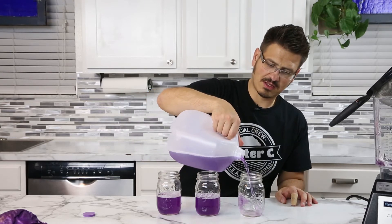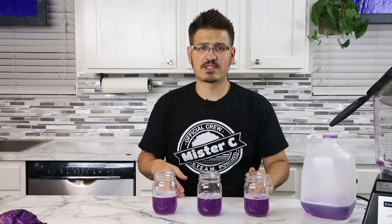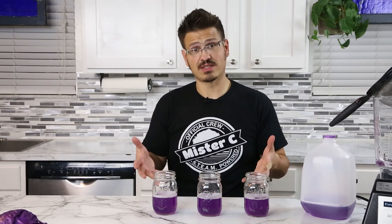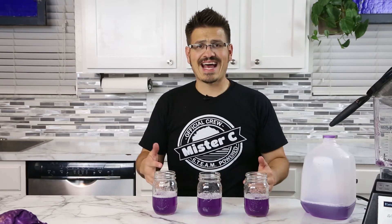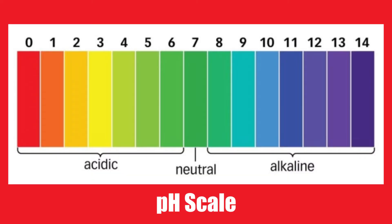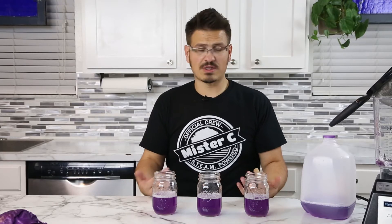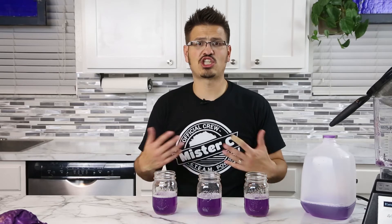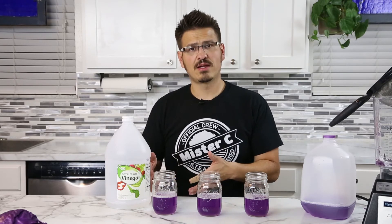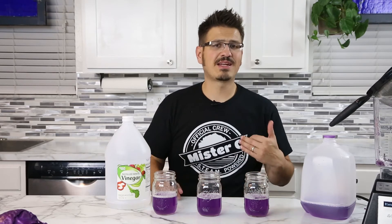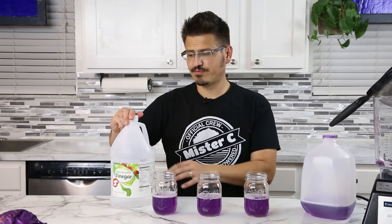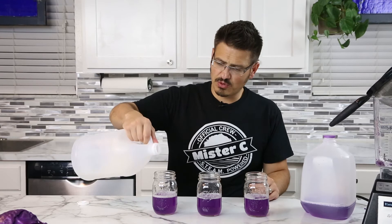Red cabbage has a special chemical called anthocyanin. Now that we have our containers, let's talk about acids and bases. Seven is considered neutral — right in the middle — and that's what red cabbage juice represents as a neutral indicator with a pH of seven. Acids have a pH lower than seven; bases have a pH higher than seven. So right now everything is neutral, and we're going to add something to our containers to see if it changes.